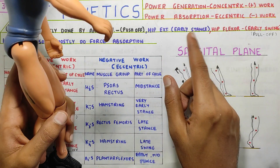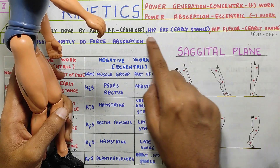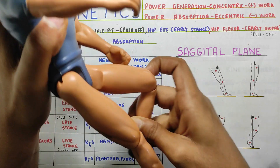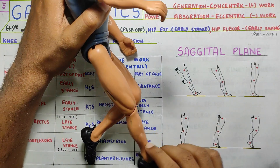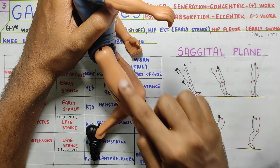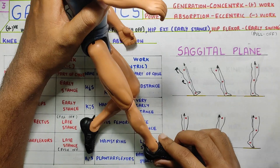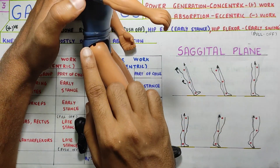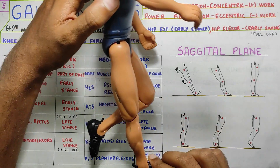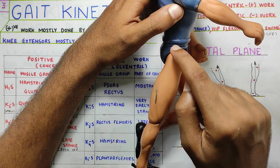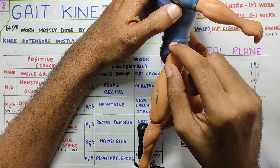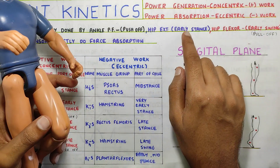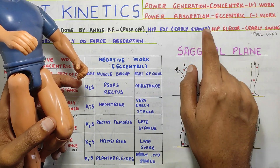The second important concentric work is hip extension in early stance. The other leg goes for swing and the stance leg is planted on the ground as you move ahead. Hip extension is happening and during this hip extension your gluteus muscle will be working concentrically. That is the second positive work in early stance.